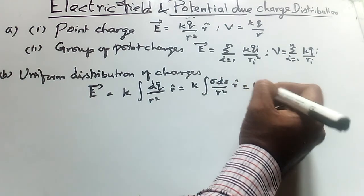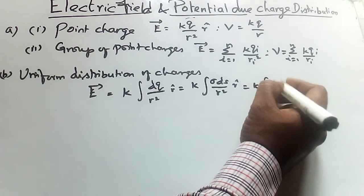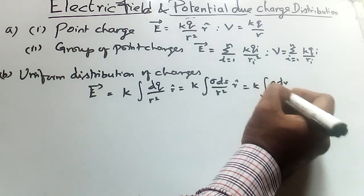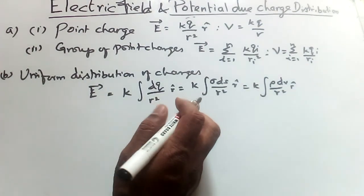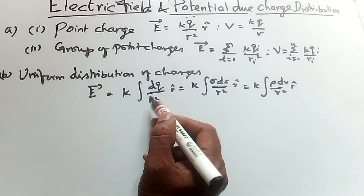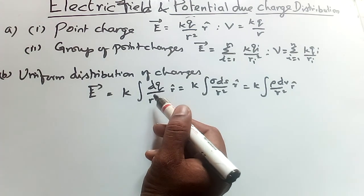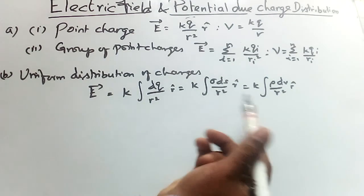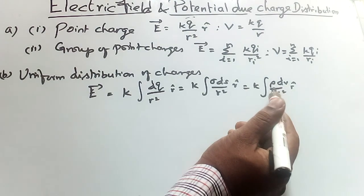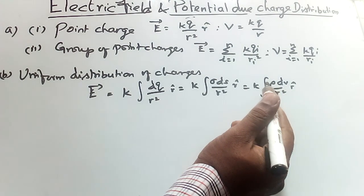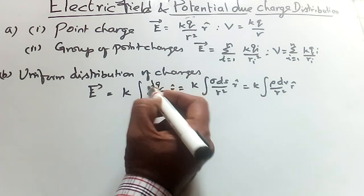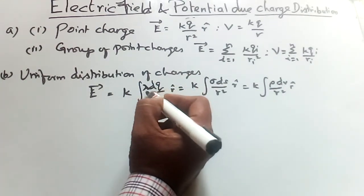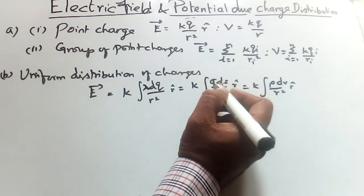Equals K integral rho dv by R square R cap. This is for distribution of charges for linear, surface, and volume charge densities. Lambda is for linear charges, sigma is surface density, and rho is volume charge density.